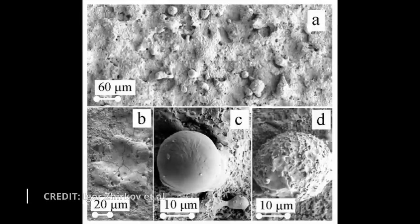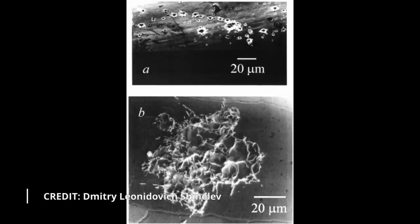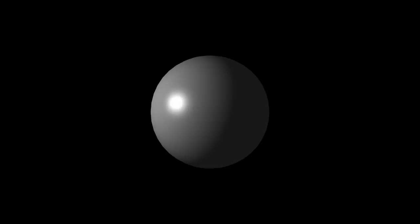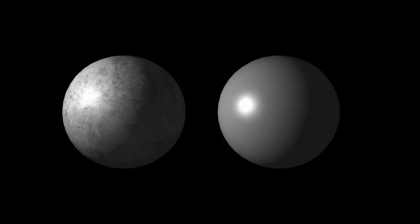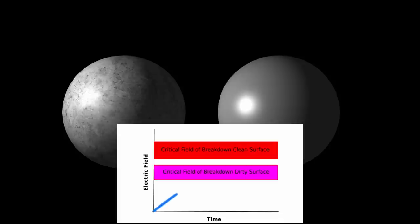Early observations of cathode spots identified the important role of surface chemistry on ignition conditions. In the 1970s, two distinct groups of spots were defined. Unless the cathode is specially treated, the surface has contamination in the form of oxides and dust particles. Type 1 spots appear on a contaminated surface and Type 2 appear on a clean surface. The presence of contamination reduces the critical field strength for spot ignition, meaning that it is easier to ignite.